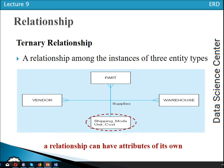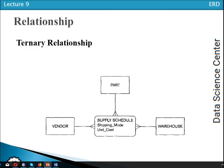Whenever we have a ternary relationship, an excellent approach is to remove it using the concept of the associative entity, as discussed in the video 'Entity Relationship Model 04 Relationship'. Whenever we have a ternary relationship — a relationship among the instances of three entity types — we use the associative entity approach. Also, whenever we have an attribute on the relationship, we should use an associative entity type, which is an excellent approach.